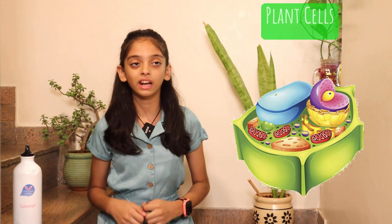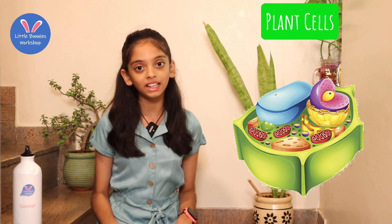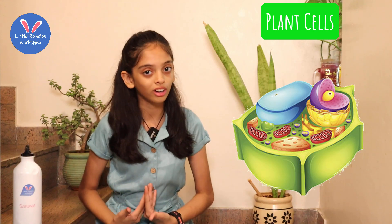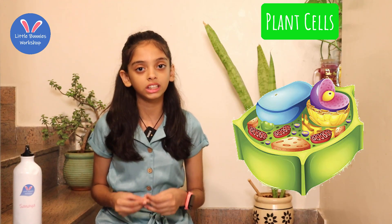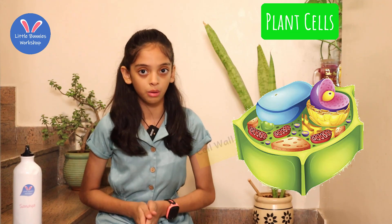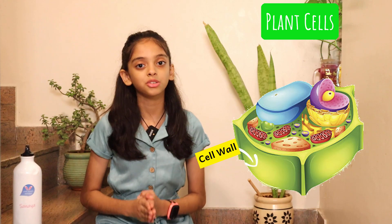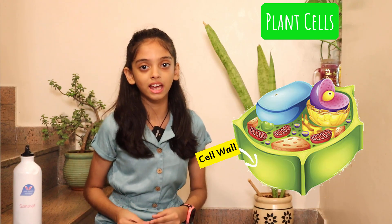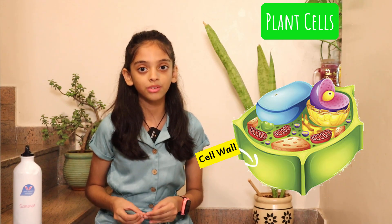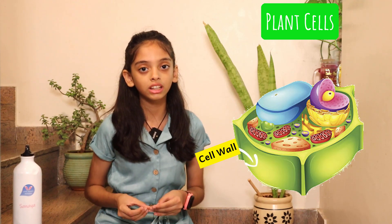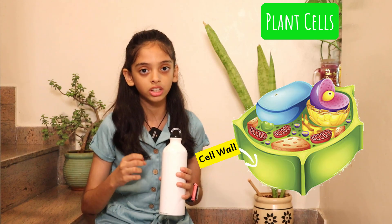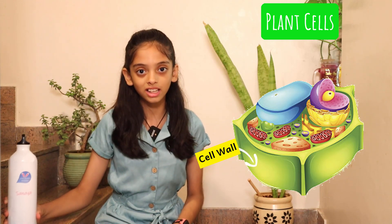Now let's start by exploring plant cells. Plant cells have many unique features which help them grow tall and strong. Let's explore these unique features one by one. The first is the cell wall. The cell wall is a rigid layer on the outer side of the cell. It keeps the cell in shape and protects it, and it is made of cellulose. We can relate the cell wall to a water bottle — its outer layer is rigid and strong, just like the cell wall.